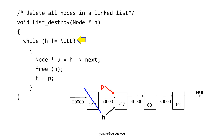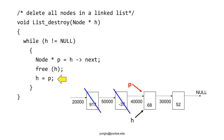h points to a valid node and it is not null. Thus, the program enters the while loop and sets p to be the next node after h. The next step frees h, releasing the memory occupied by the node. The next step moves h to the next node, so h points to the same node as p. The program goes back to the top and checks whether h is null or not.